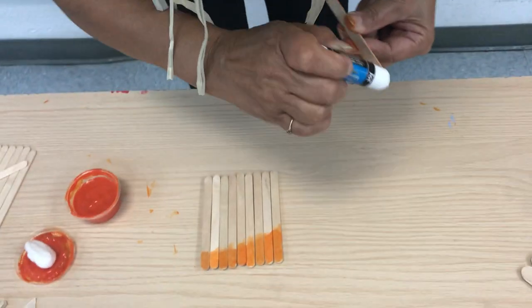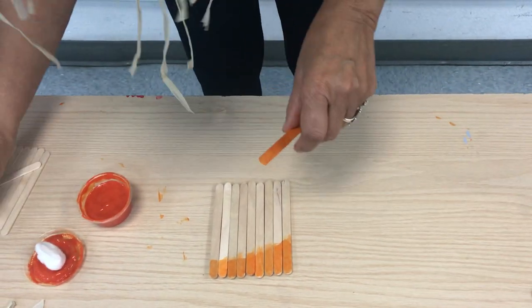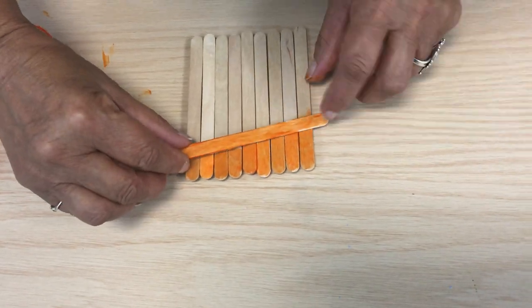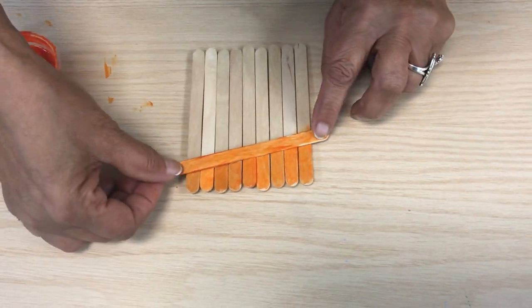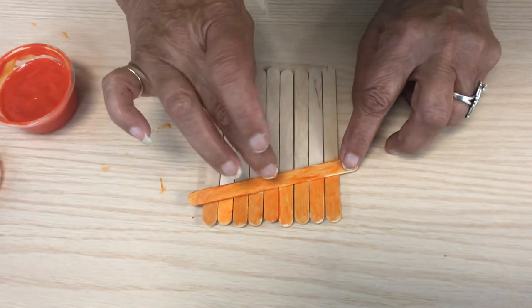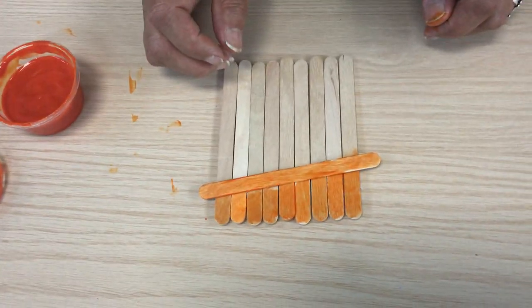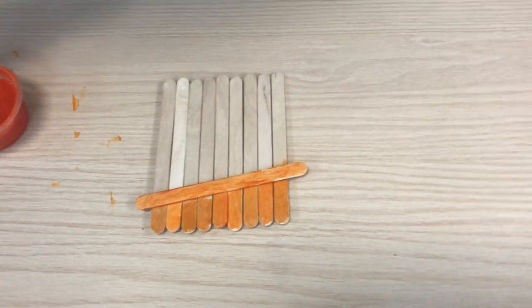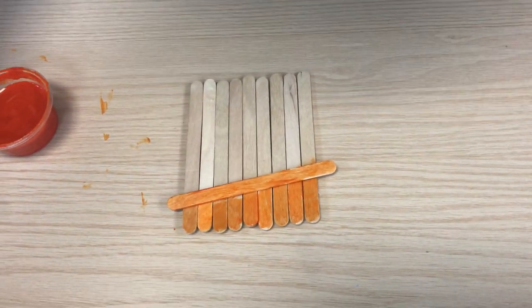Lo vamos a pegar en la parte de abajo del sombrero. Then you're going to place that in the bottom in an angle just like that. Y lo podemos poner en forma de ángulo para que tenga el sombrero de lado.